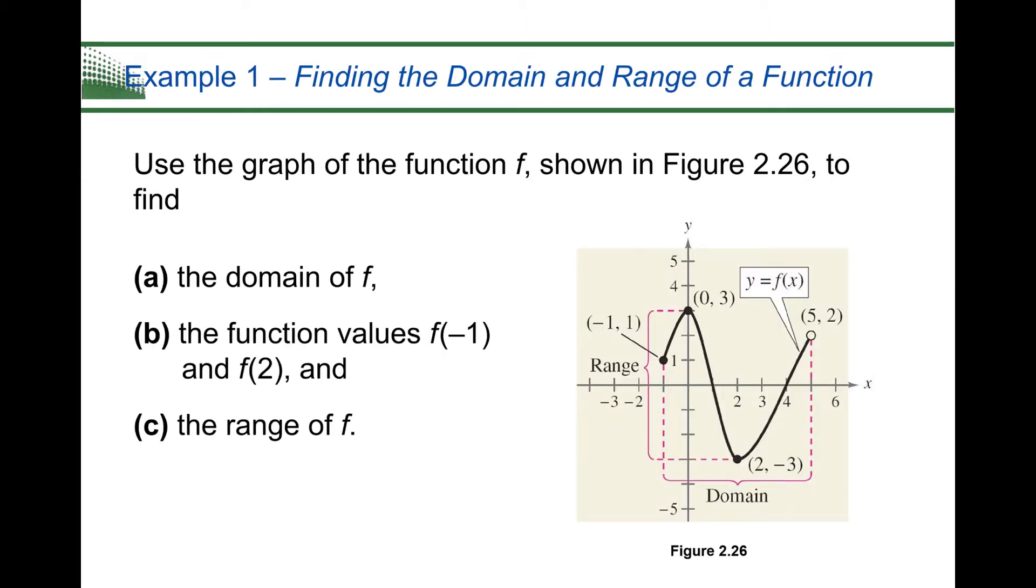We're going to use the graph of function f shown in Figure 2.26 to find three different things: the domain of f, the functional values of f of negative 1 and f of 2, and the range of f. When we're looking at domain, we're looking at all the possible x values. So we're looking from the farthest left, which happens to be this side, to the farthest right. So we're starting at negative 1 and going to positive 5.